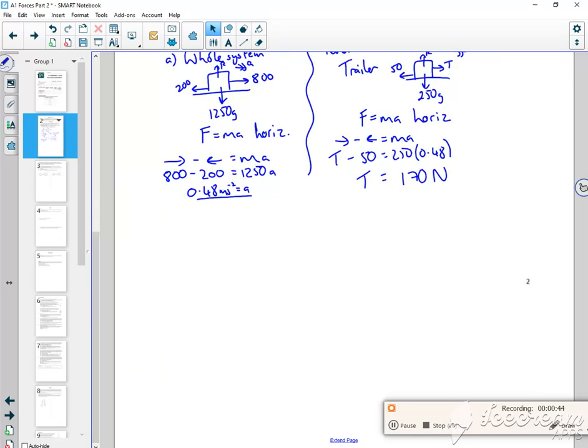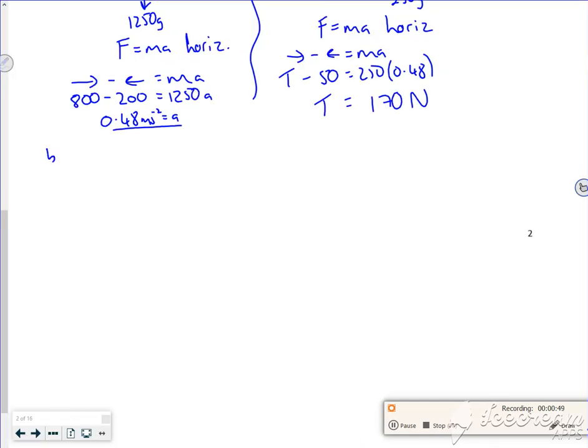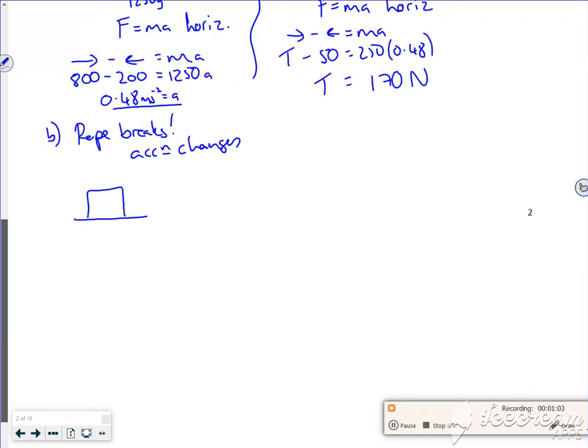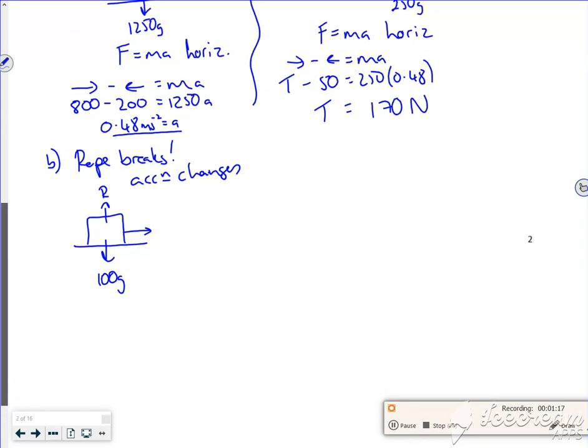Let me get a bit more room. The acceleration has changed. So for part B, the rope breaks and the acceleration changes. Now I've got my car which weighs 1000 g. It's got the same driving force which is 800.